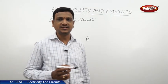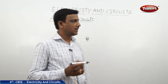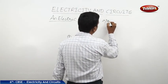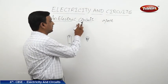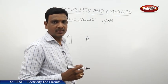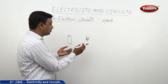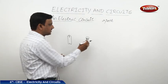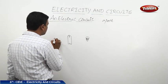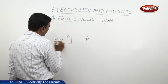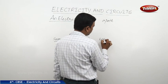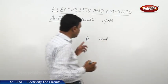Look at the electric circuit. A circuit means a path, so an electric circuit is the path in which electricity flows. Here we have two electrical components: one is an electric bulb and the other is a cell. The cell is the source of electricity, and the bulb is the load — it uses electricity to glow.